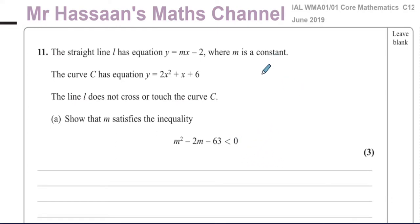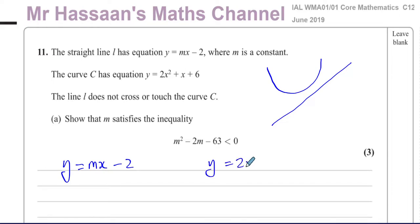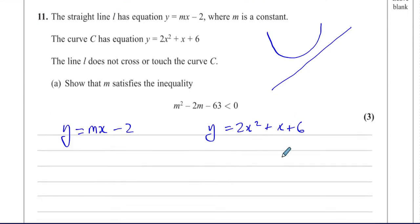When you have a quadratic curve and a straight line that don't intersect — if I try to solve the two equations simultaneously, there will be no solution. So if I try to solve Y equals MX minus 2 simultaneously with Y equals 2X squared plus X plus 6, what's going to happen is I won't get any solution.